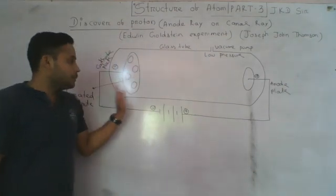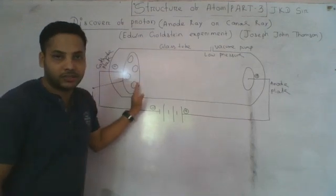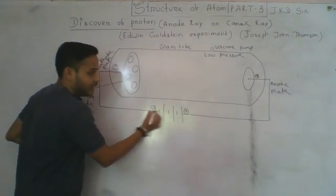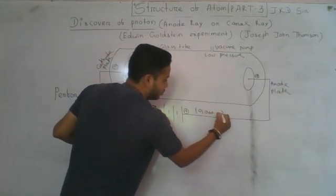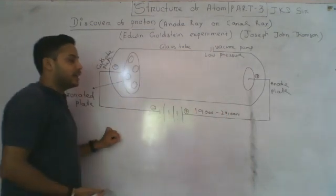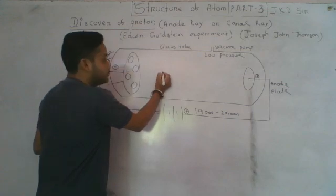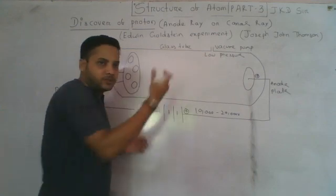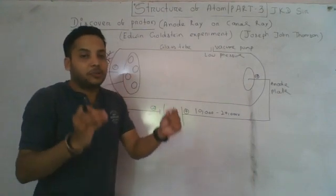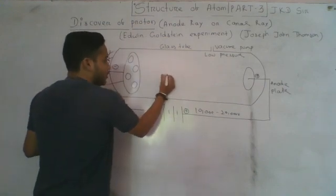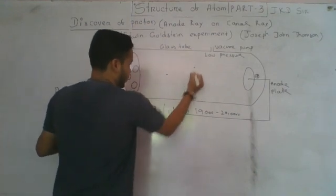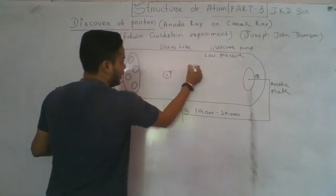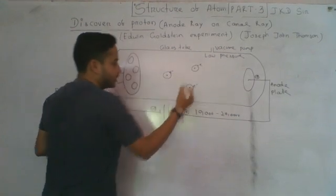These holes were made in the cathode plate. The applied voltage was very high — about 10,000 to 20,000 volts. Hydrogen gas was used in the tube. When hydrogen gas enters, the hydrogen atom gets ionized and you get a hydrogen ion, and electrons are removed at this point.